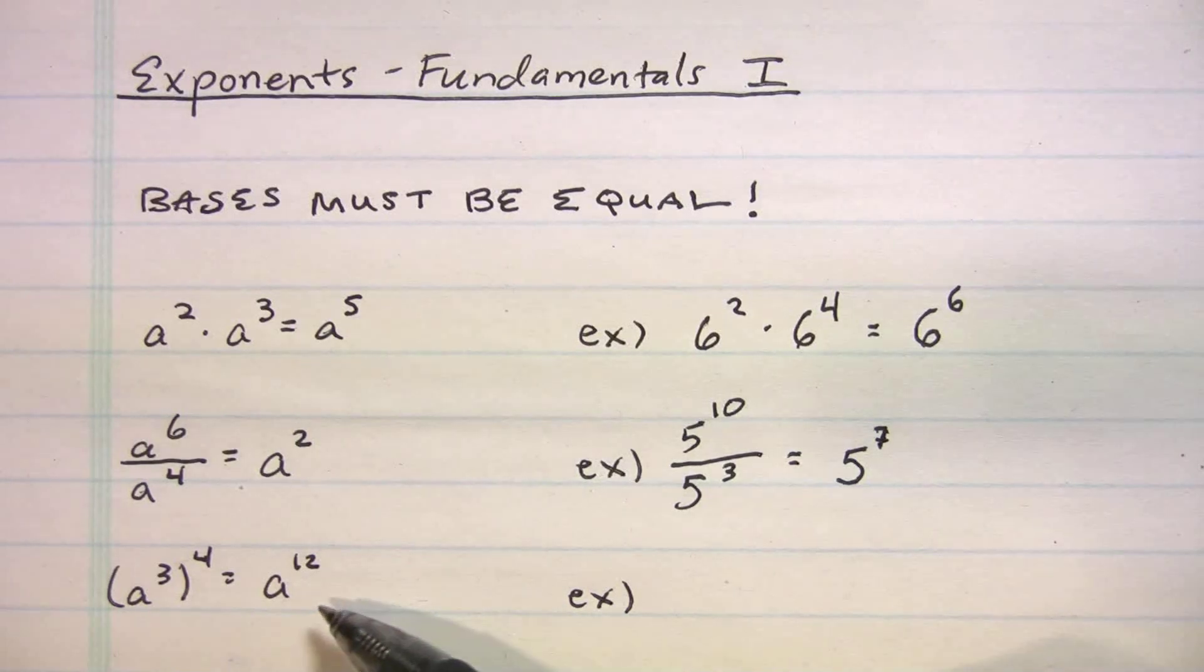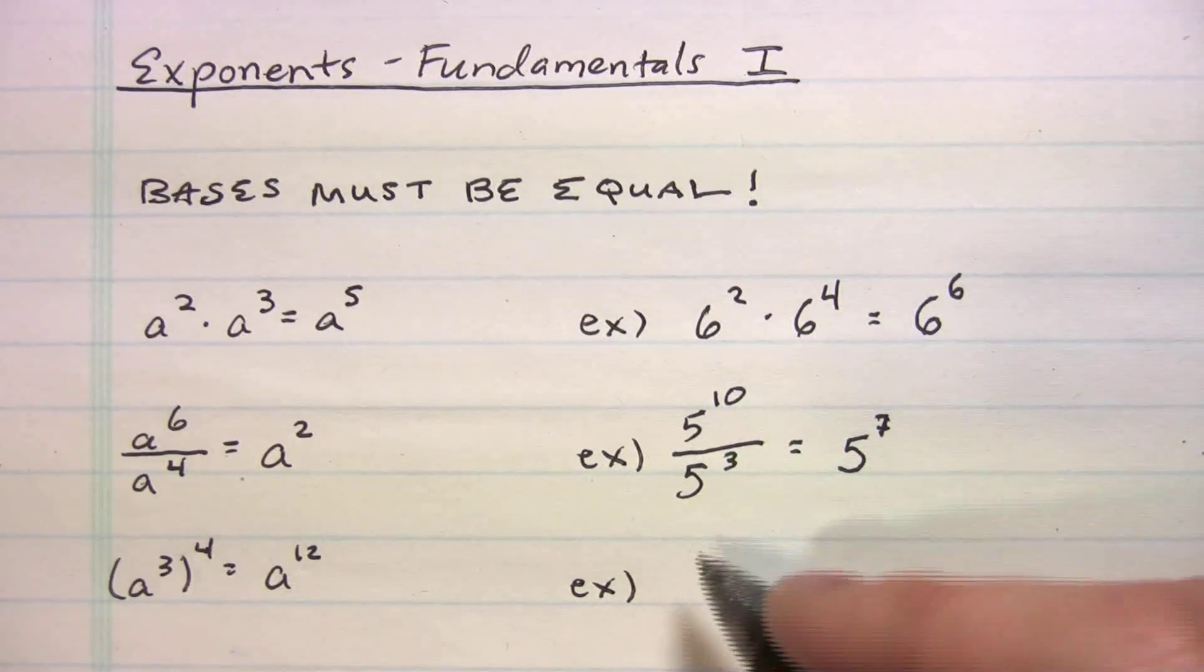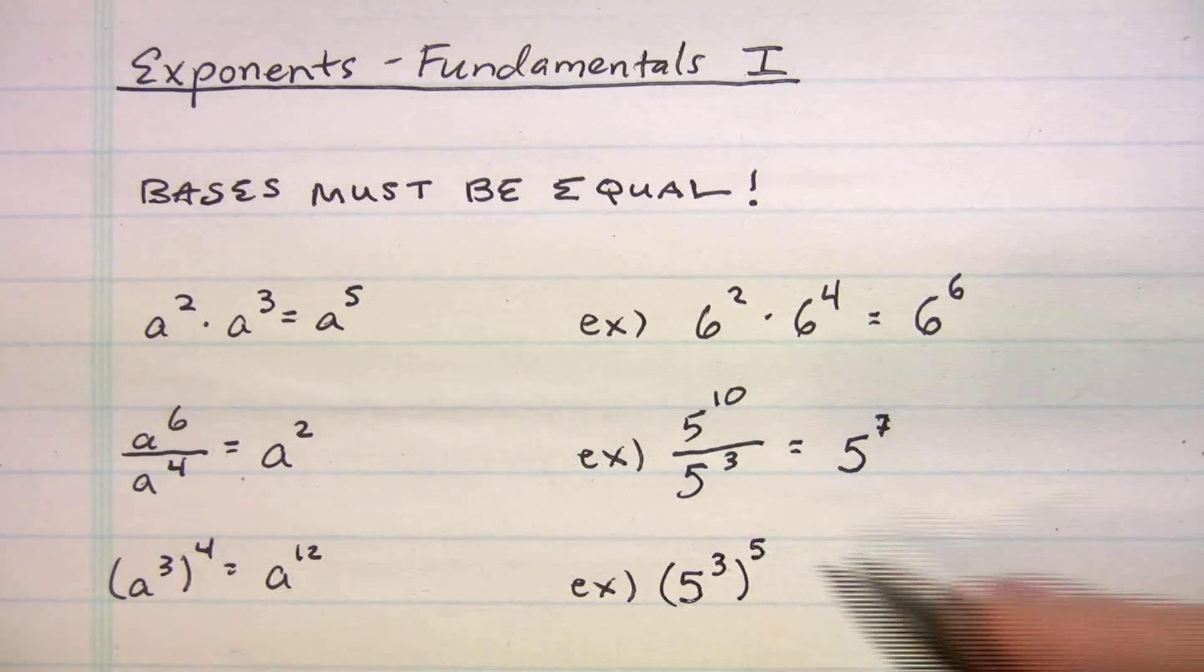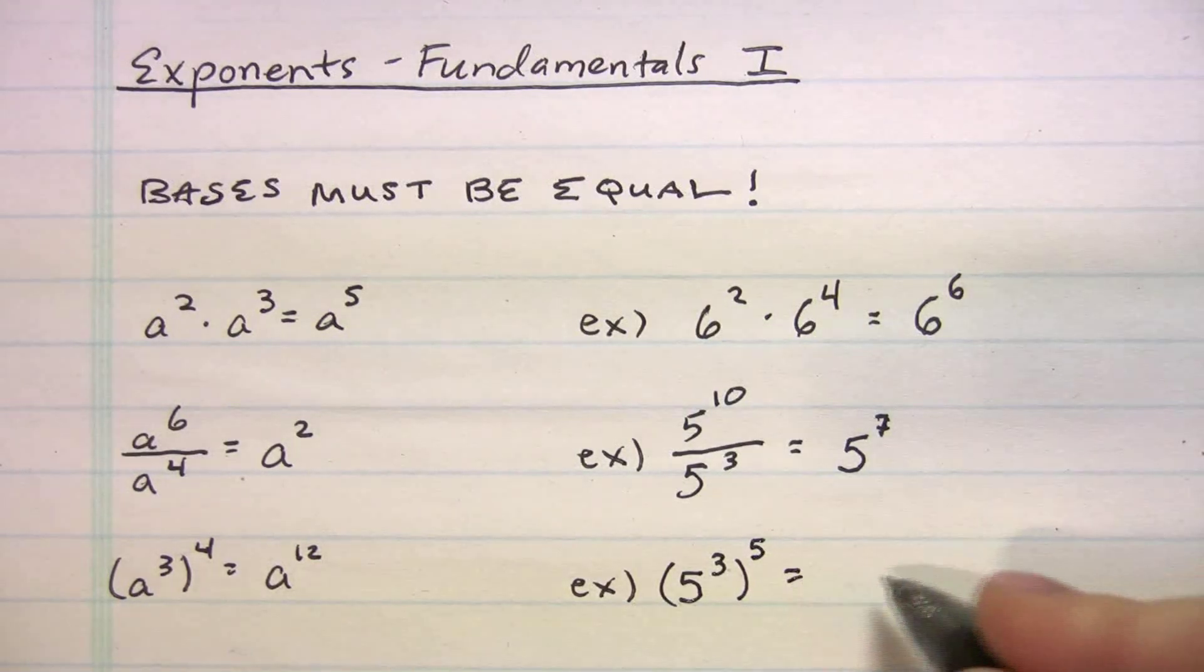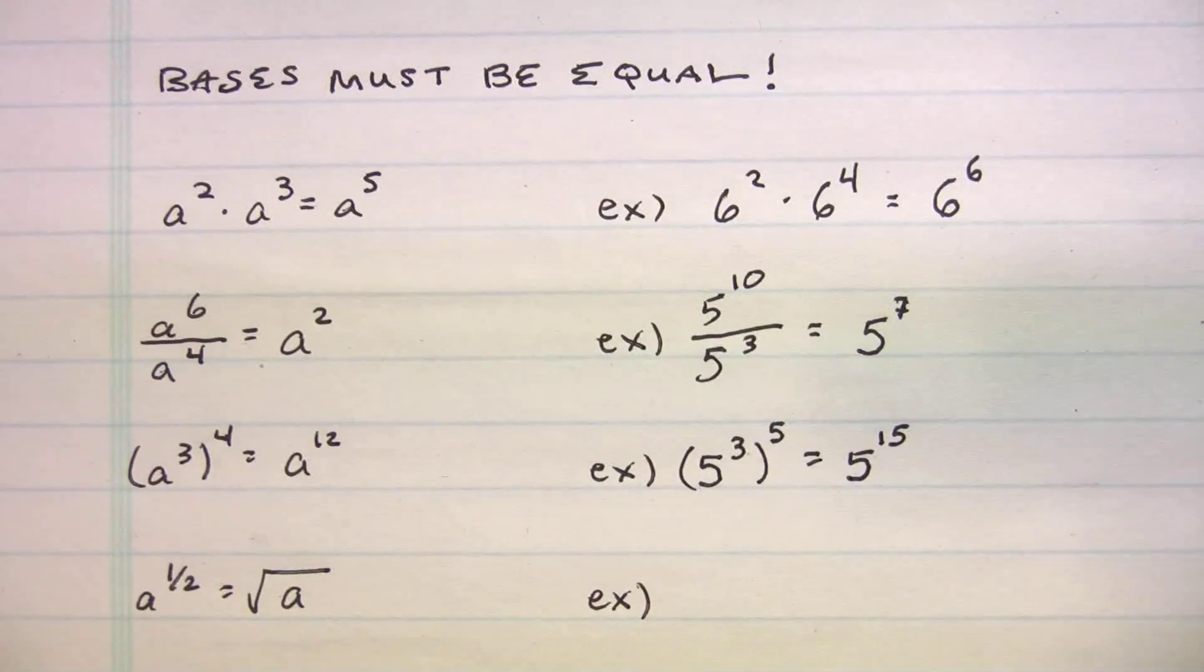Here's one that sometimes people forget. When you're raising a power to a power, you're going to multiply. So a to the third raised to the fourth is just going to be a to the three times four or twelve. So you're just going to multiply those powers. And let me give you an example of that. Let's say you had five cubed raised to the fifth. We're getting a really big number, but that's okay. We just keep the base and we get five to the fifteenth. Three times five is fifteenth.